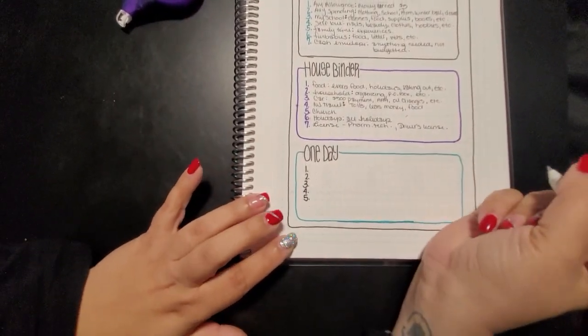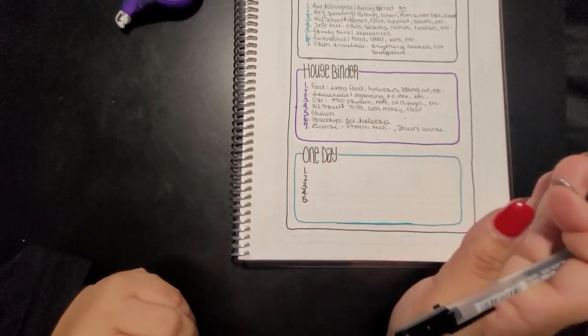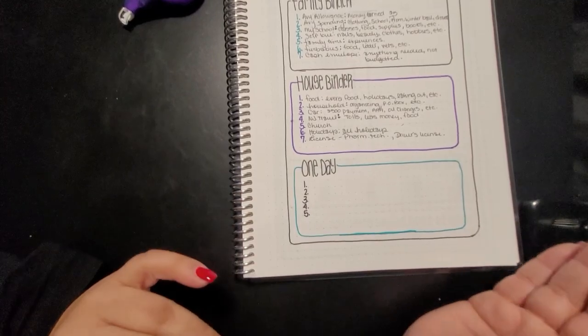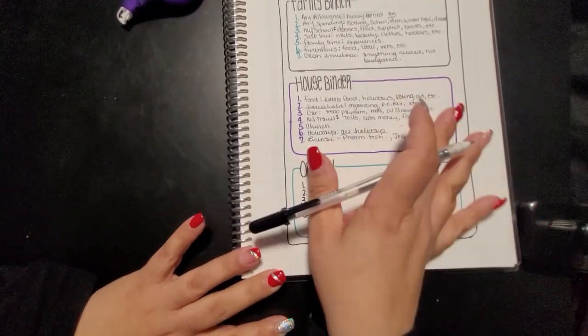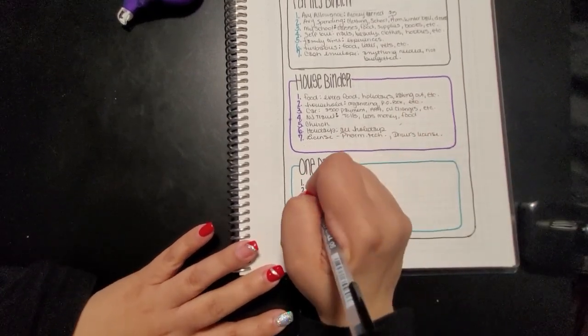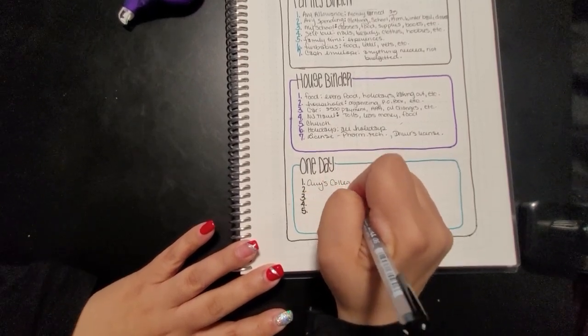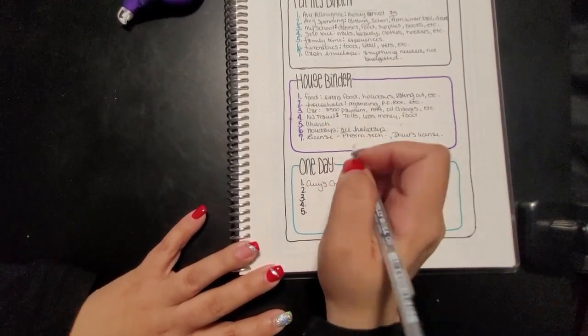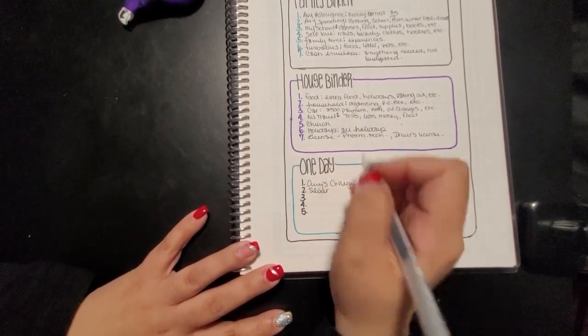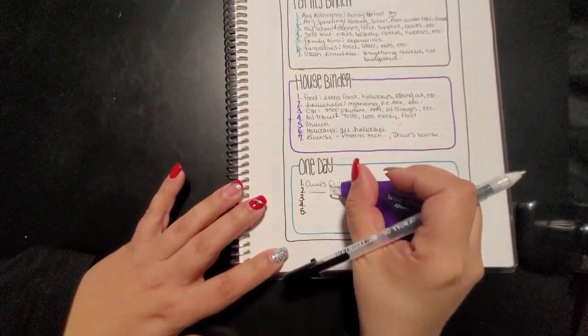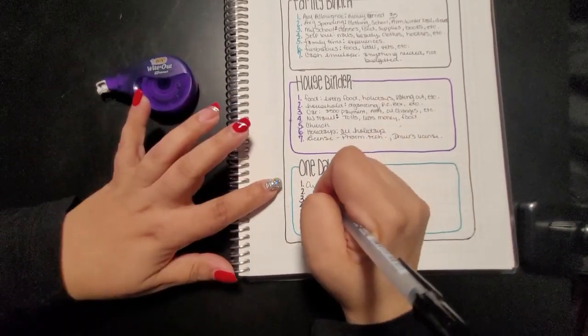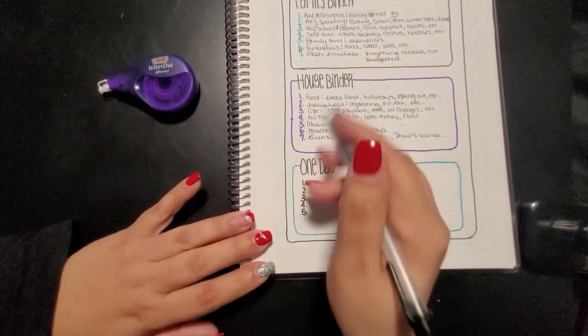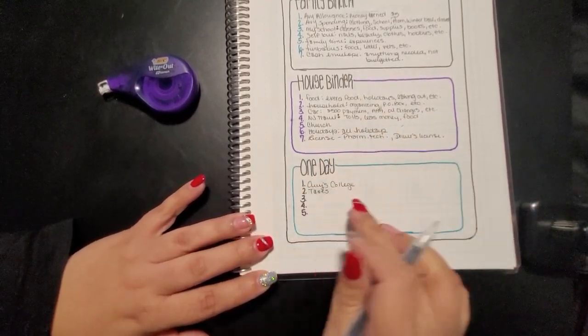So moving on, we have our one day binder. One day binder is literally things that it might be something that I only need once or it might be something that I need often, or it could be just things that I'm saving for that is not in a challenge. So there's only five of them and I tried to pick the ones that I felt was very important. So I have Avery college, and this is because she's going to be going to college in two years, so I got to figure that one out.